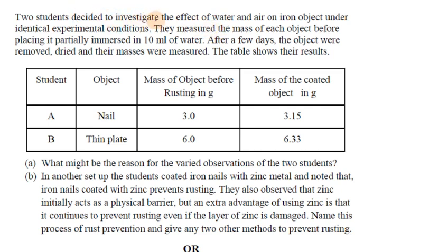Two students decided to investigate the effect of water and air on iron objects under identical experimental conditions. They measured the mass of each object before placing it partially immersed in 10 ml of water. One student used a nail and another used a thin plate. They measured the weight — the nail is 3 grams and the thin plate is 6 grams.